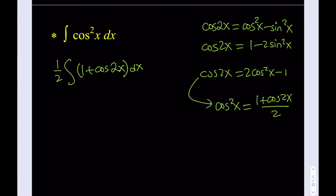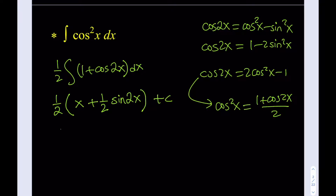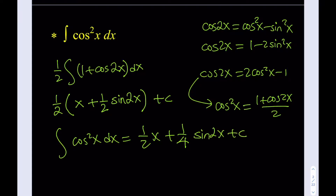The integral of 1 is x. For cosine 2x: the integral of cosine x is sine x, but when you differentiate sine 2x you get 2 cosine 2x, so you need to introduce an extra one-half to compensate for the 2 from the chain rule. Distributing the one-half, the integral of cosine squared x dx equals one-half of x plus one-fourth of sine 2x plus c.